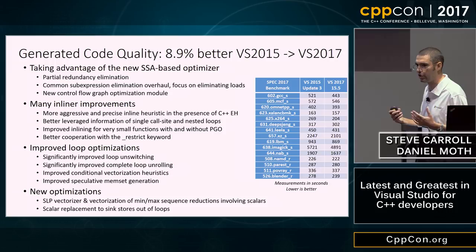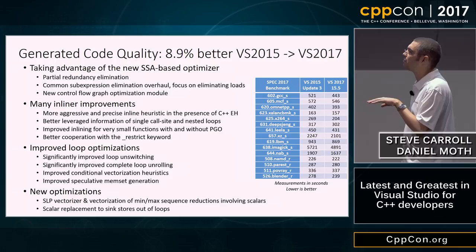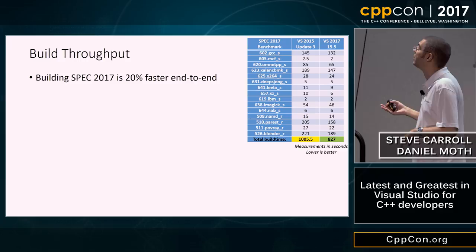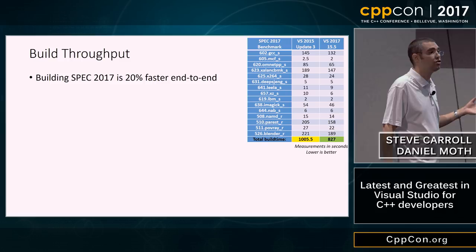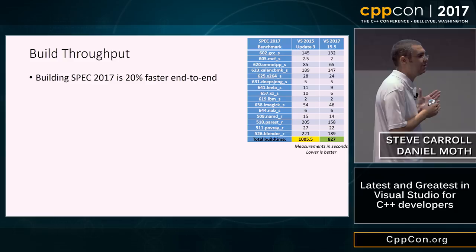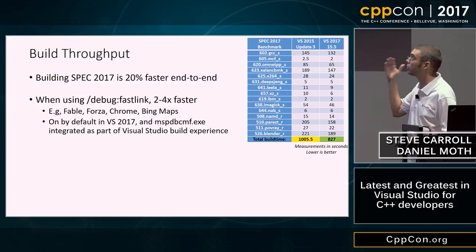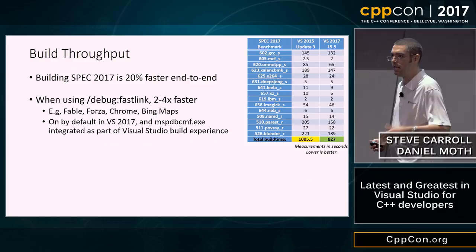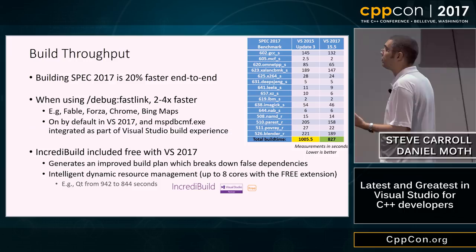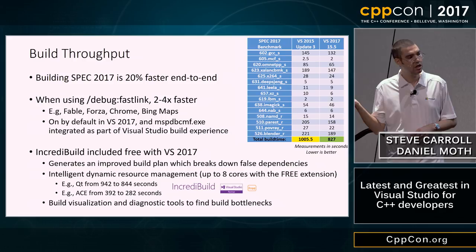On build throughput: looking at SPEC 2K17, we're around 20% faster than the compiler shipping with Visual Studio 2015 Update 3. The debug fast link linker option is now on by default, giving you two to four times faster linking. Also, IncrediBuild has a product that parallelizes your build across multiple cores — we've negotiated a free extension to Visual Studio for it, though it's capped at eight cores.